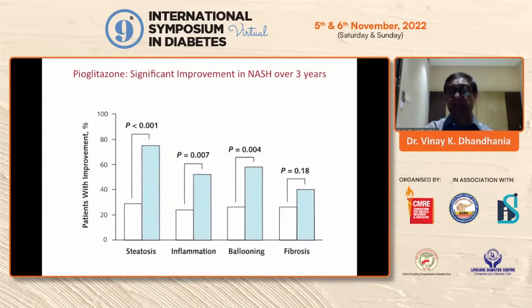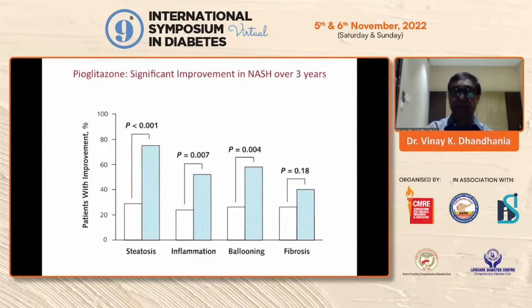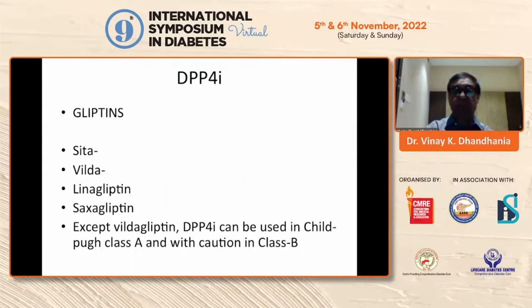Pyoglitazone is known to improve NASH and is the only drug FDA-approved for use in NASH. Importantly, the level of enzymes should not be more than three times normal when starting this therapy. Once enzyme levels have come down with diet, exercise, and weight reduction, you can start this drug at 30 mg.